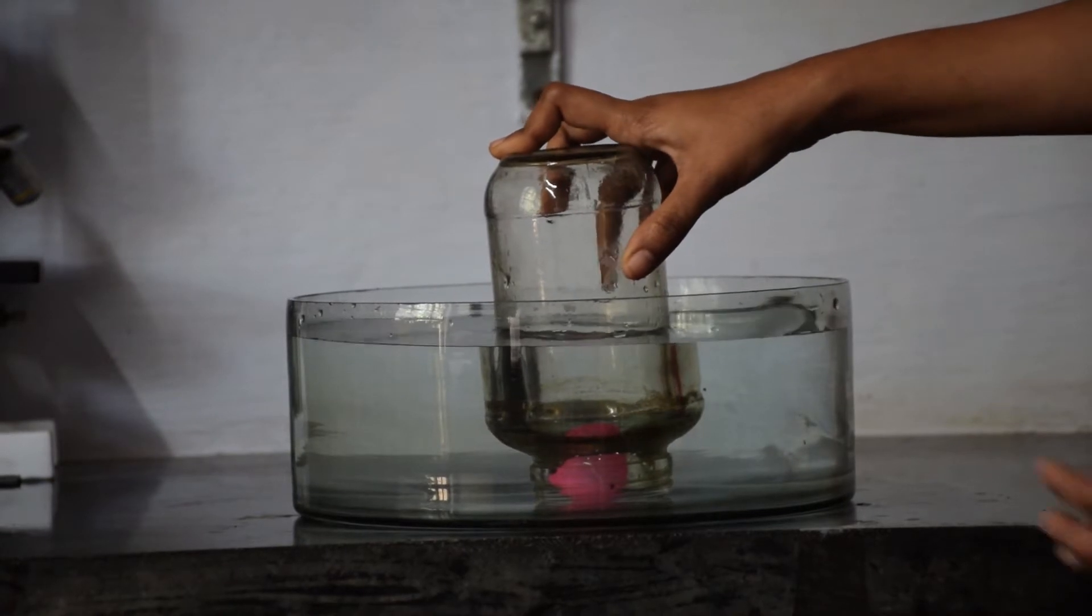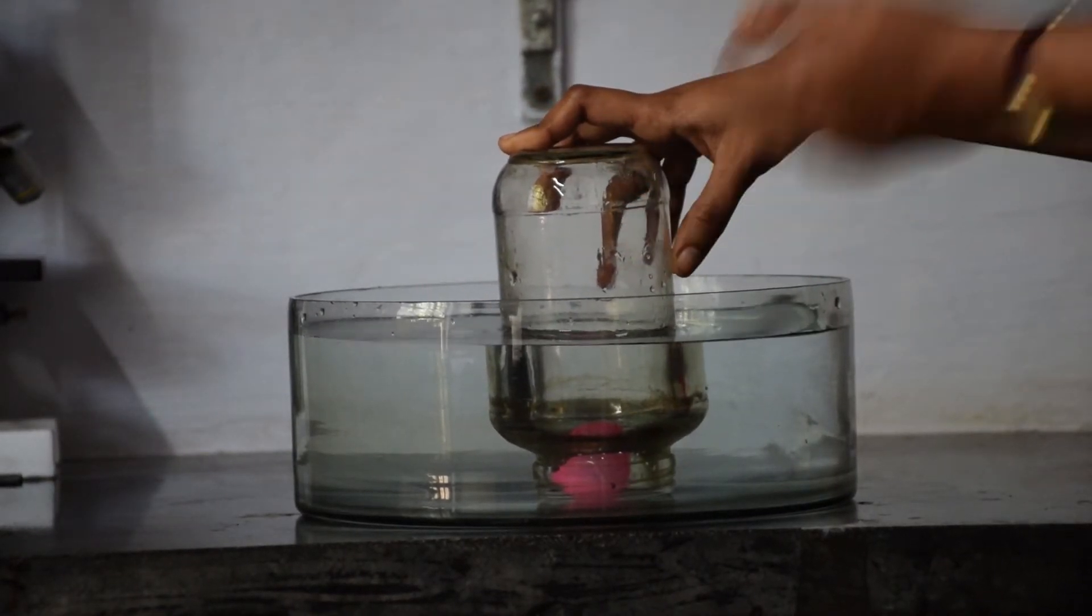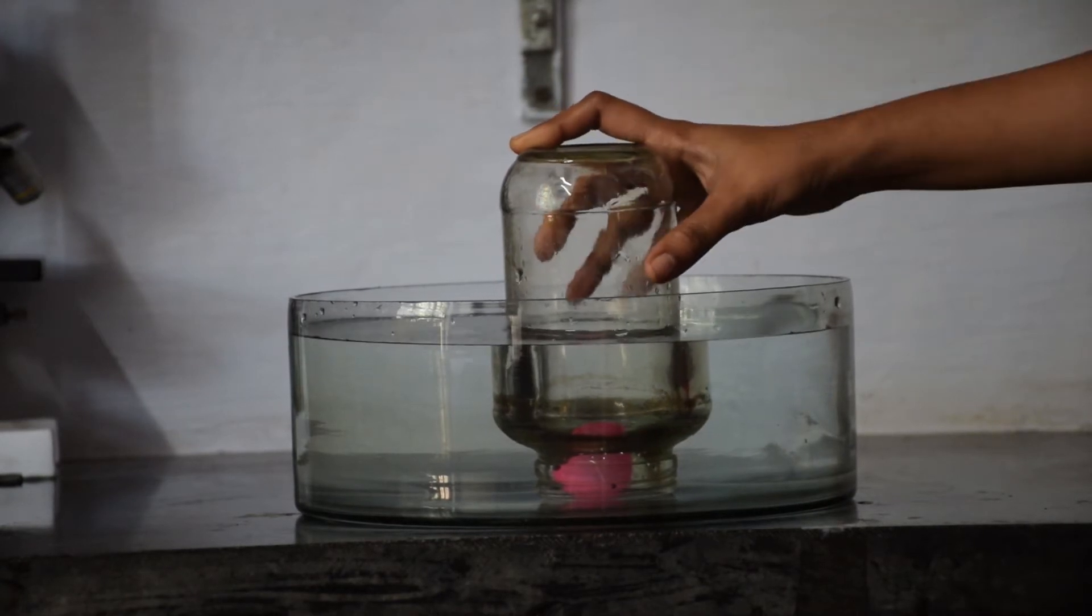Now why do you think the ball did not stay on the surface of the water or come on top, as there is so much space in the bottle? Let's try this again.